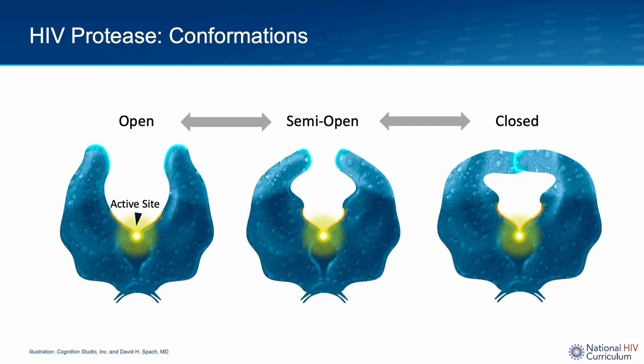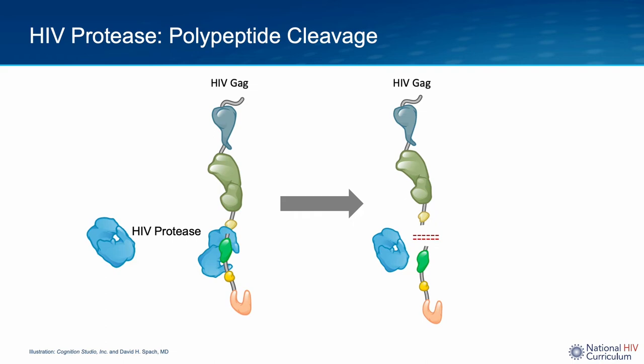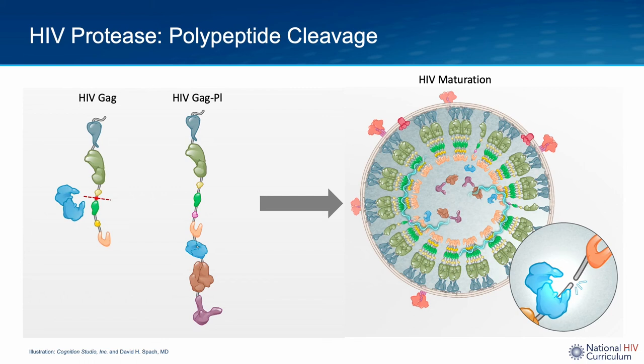Functionally, the HIV protease cleaves HIV polyproteins at multiple sites, which after multiple clips frees the individual HIV proteins. HIV protease plays a critical role in protein processing of the GAG and GAG-POL polyproteins during the HIV maturation process, very late in the HIV life cycle.